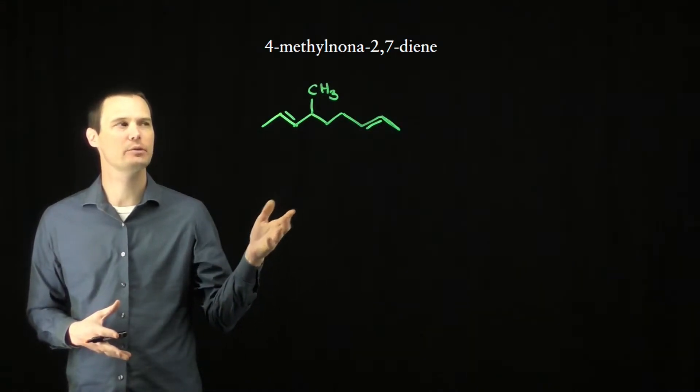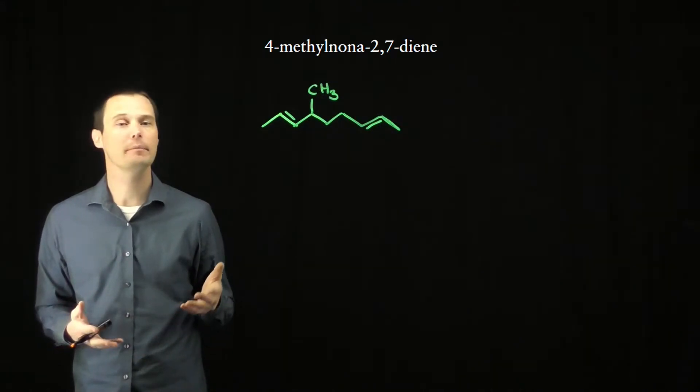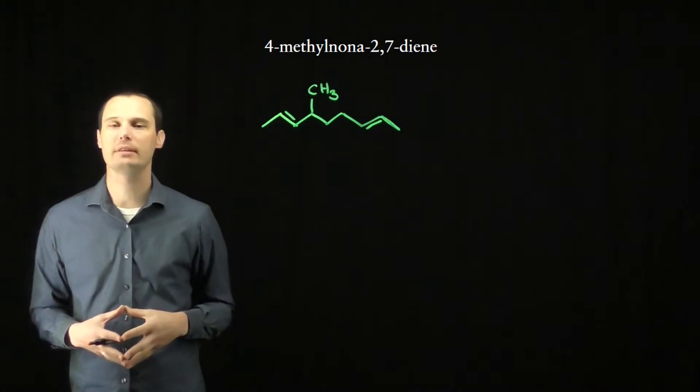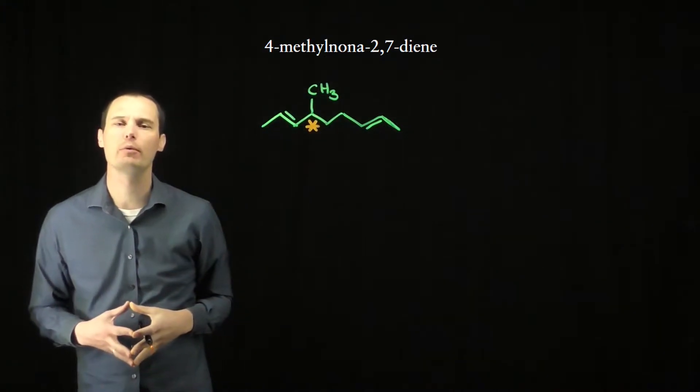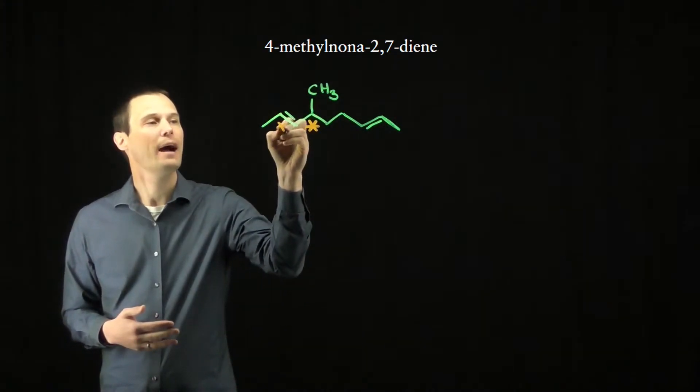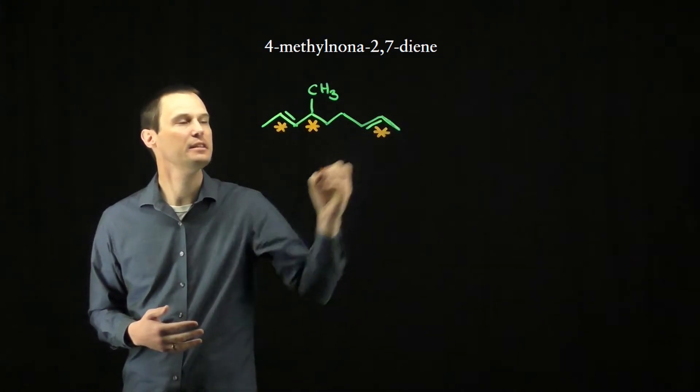This question asks how many stereoisomers there are for the molecule 4-methyl-nona-2,7-diene. There's only one stereocenter in this molecule, and that's carbon number 4 with the methyl group, but both alkenes can exhibit EZ isomerism.